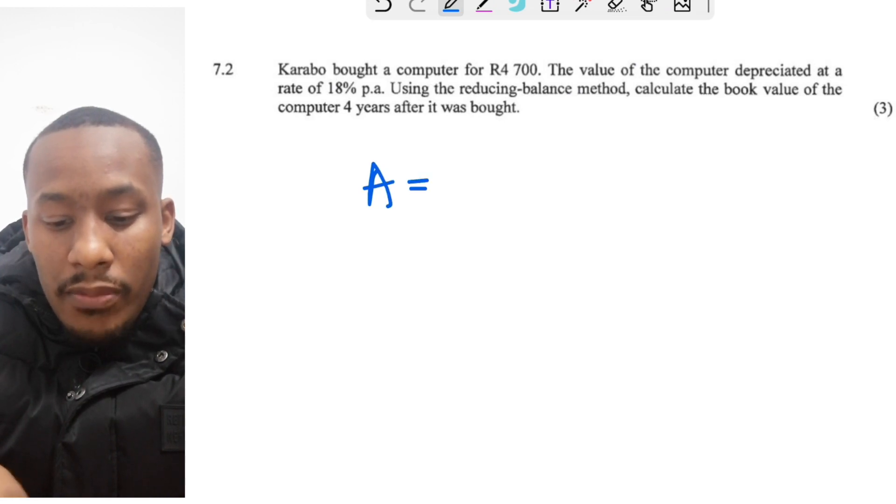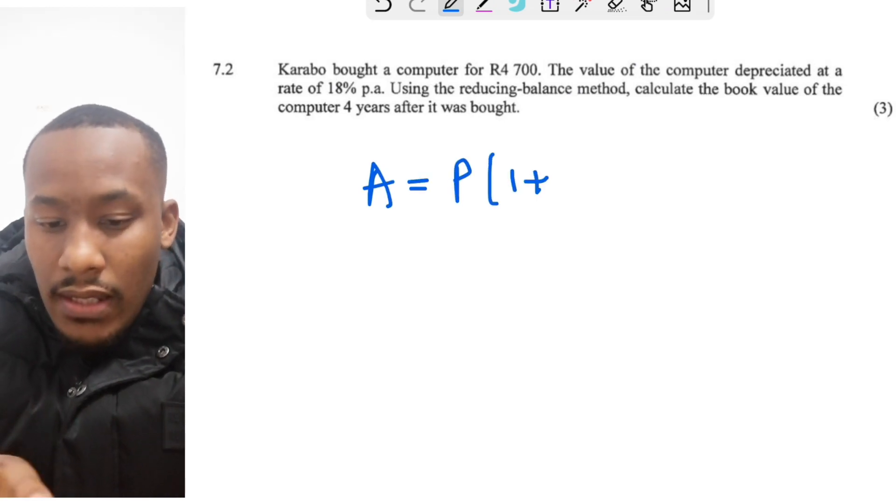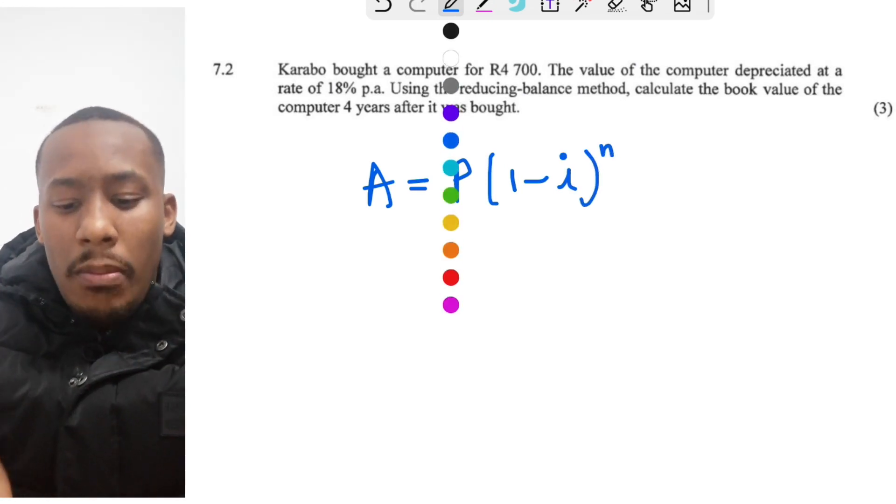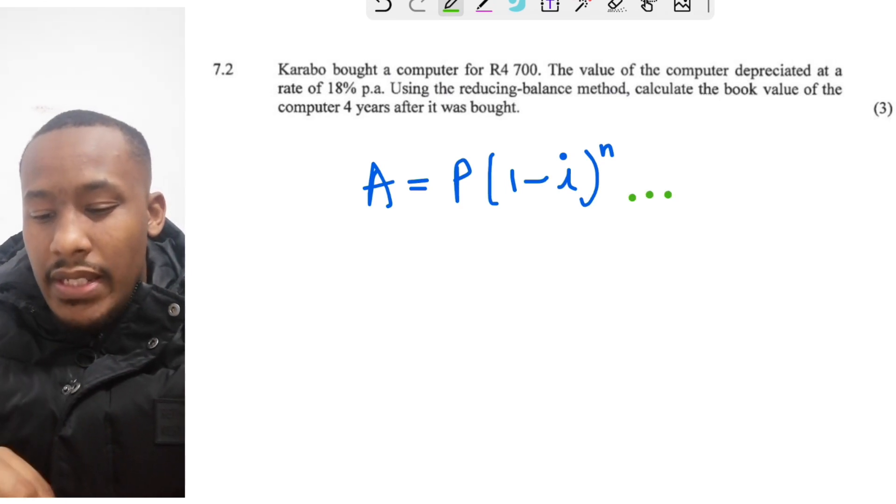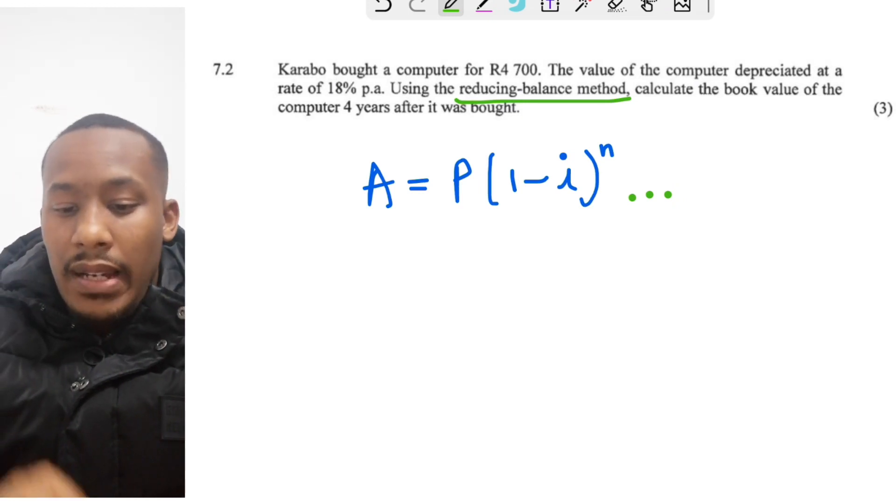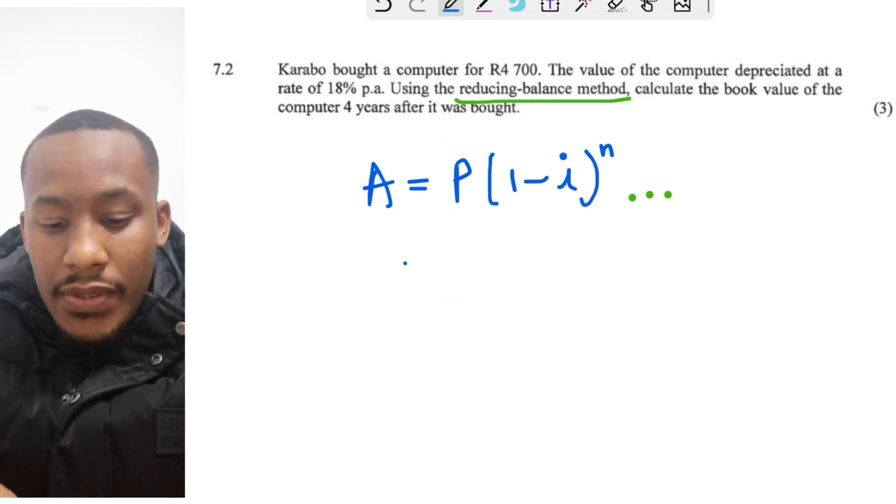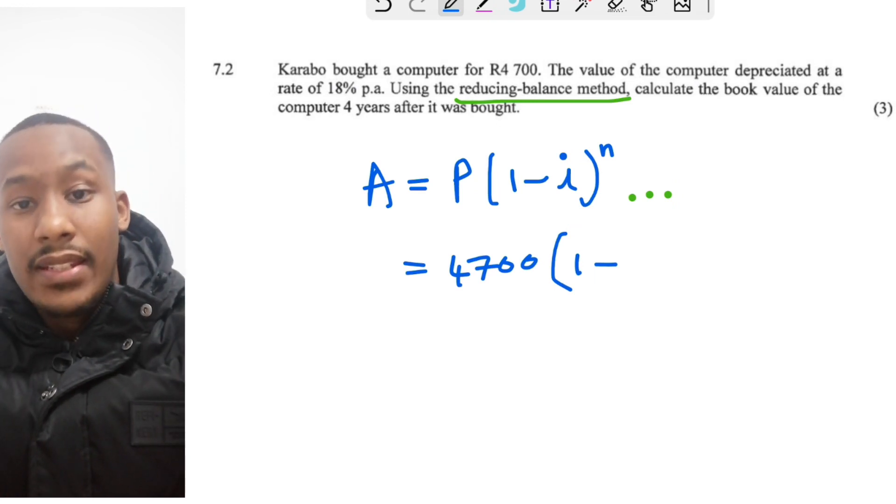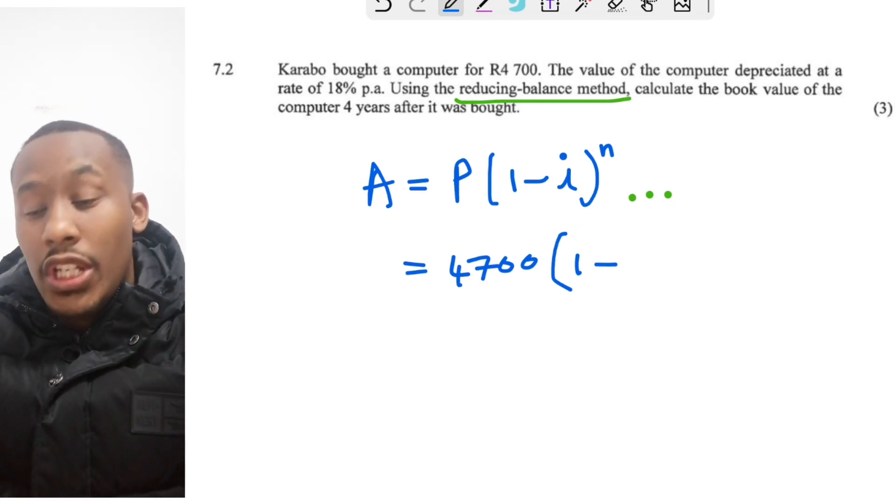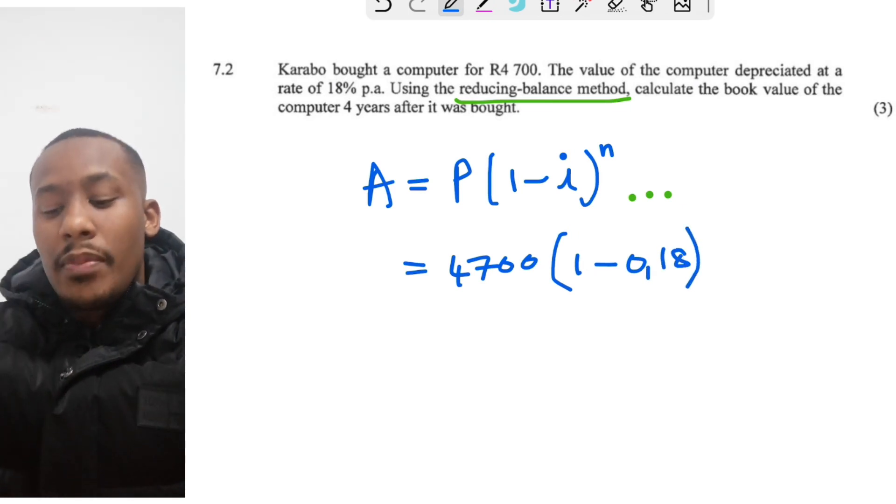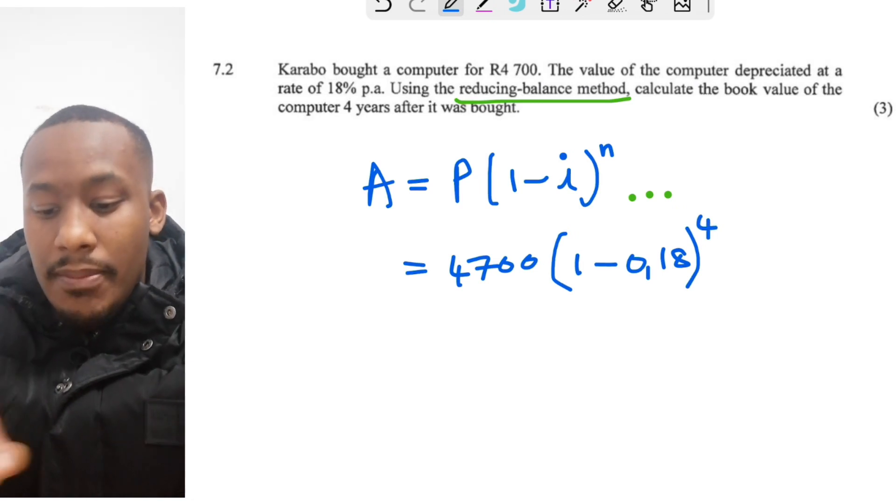Let's make use of our formula for depreciation. This is the formula you'll use, which looks very similar to the compound interest formula, except that there's a minus in the middle. This formula is strictly related to the reducing balance method. Now substitute your values, and we should get 4,700 multiplied by 1 minus 0.18 raised to the power of 4, your number of years.